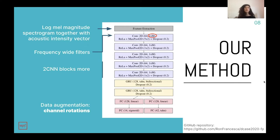Our main contribution is the introduction of rectangular filter shapes, with particular attention to frequency-wide filters. We add two convolutional layers to the network to increase the receptive field, and we also use a data augmentation technique based on channel rotation. The code is available on our GitHub repository, linked at the bottom of this slide, under an open source license.